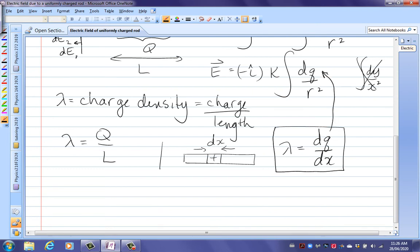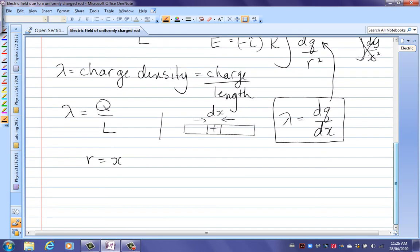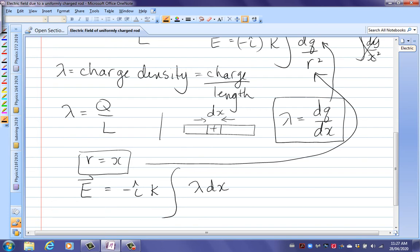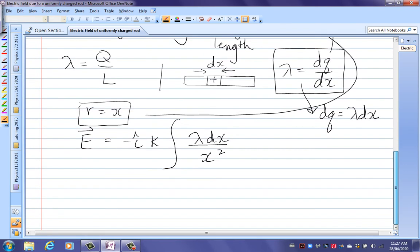So we need that to get rid of the dq up here in this integral. Because we can't integrate that with a dq there. Now, we've already established that little r equals x. Because of the geometry of the way that rod is lying on that x-axis. So let's substitute these two things back now into this integral. And we'll see that it becomes a very simple integral when we do that. So we still have the negative i hat. We've got the k. Now, instead of dq, solve this. You'll see that dq is just lambda dx. So from here we have that dq is lambda dx. Just cross-multiply there. And then we have x squared. Because r equals x.